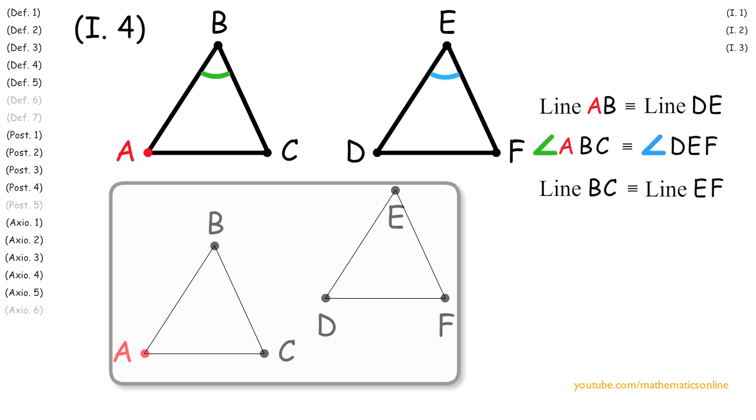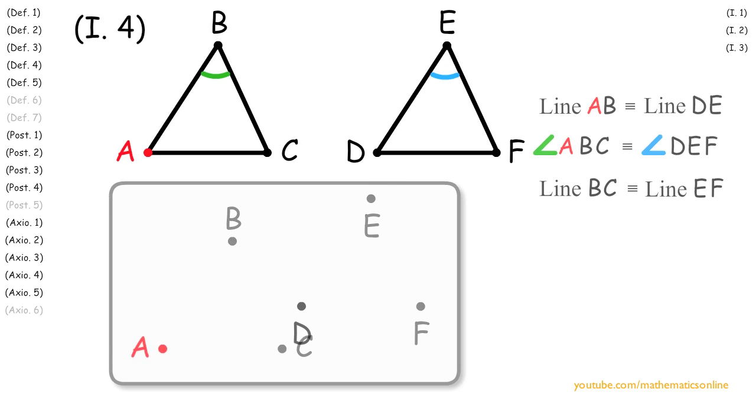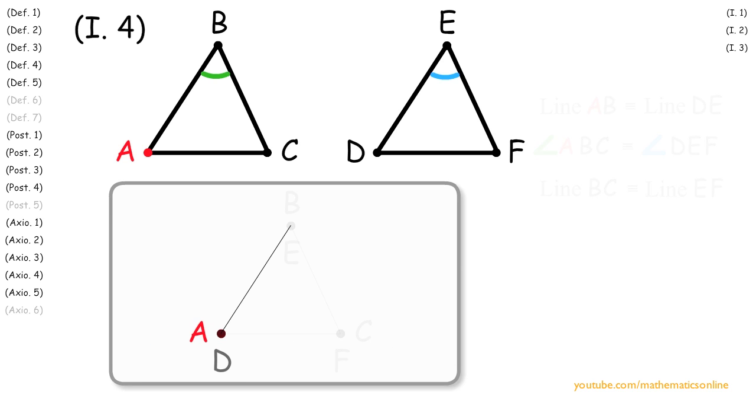Now inside the palette we are not allowed to change anything, but we will move both triangles so that point A coincides with point D, and the straight line AB coincides with the straight line DE.